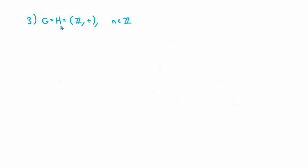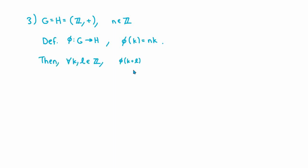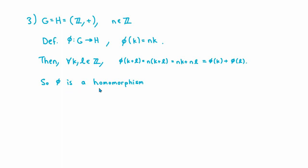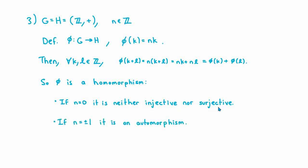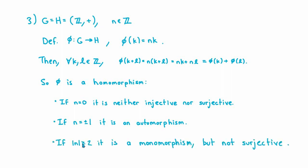For our next example, let G and H both be the additive group of integers. Let n be any integer and define phi of k equals n times k — multiplication by n. For any integers k and l, phi of k plus l equals n times (k plus l), and by the distributive property that's nk plus nl, which is phi of k plus phi of l. So phi is a homomorphism. If n is 0, this is the trivial homomorphism — neither injective nor surjective. If n is ±1, it's both injective and surjective, giving an automorphism of the integers. For any other n, it's injective but not surjective.